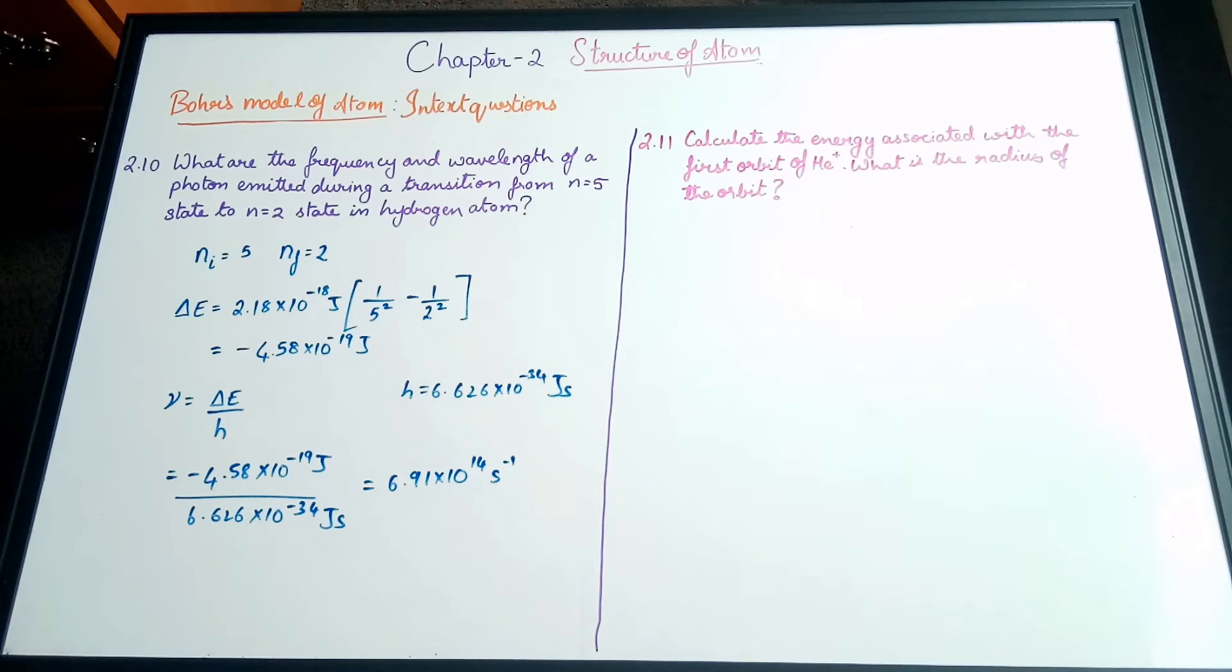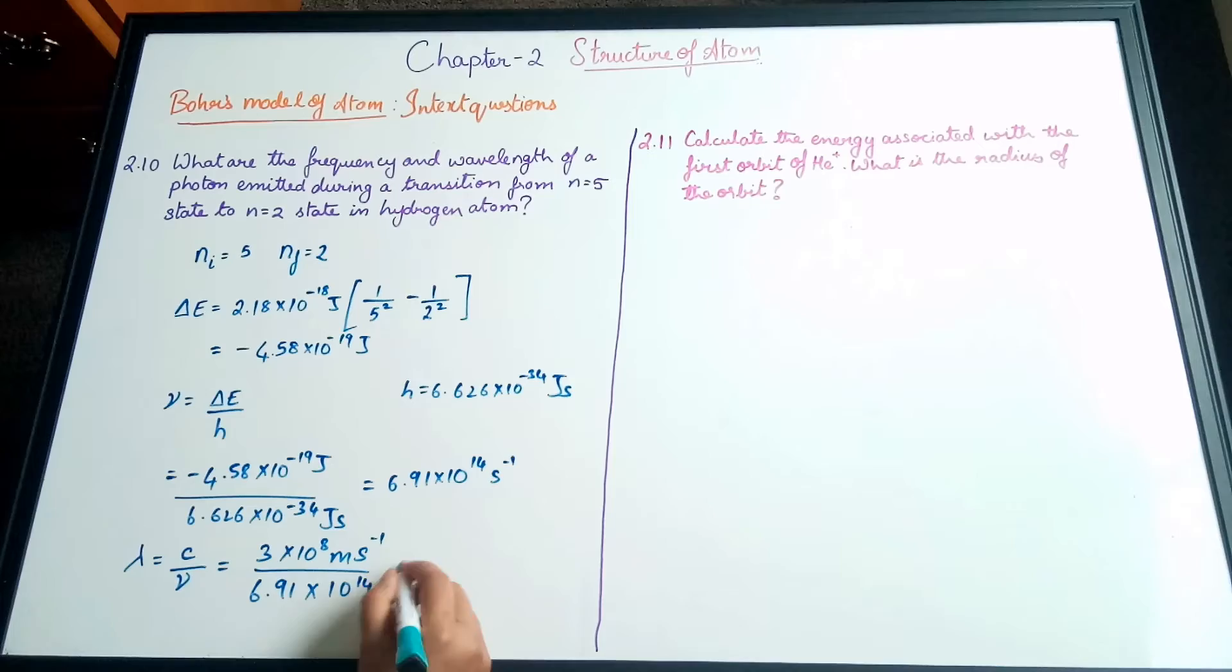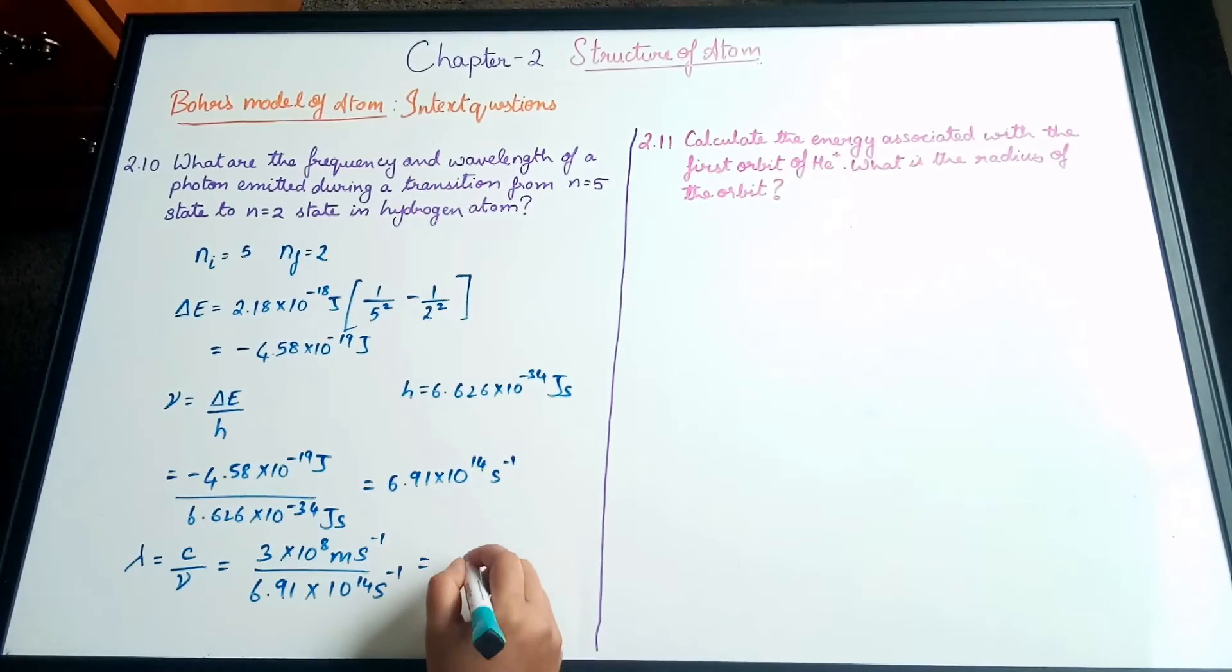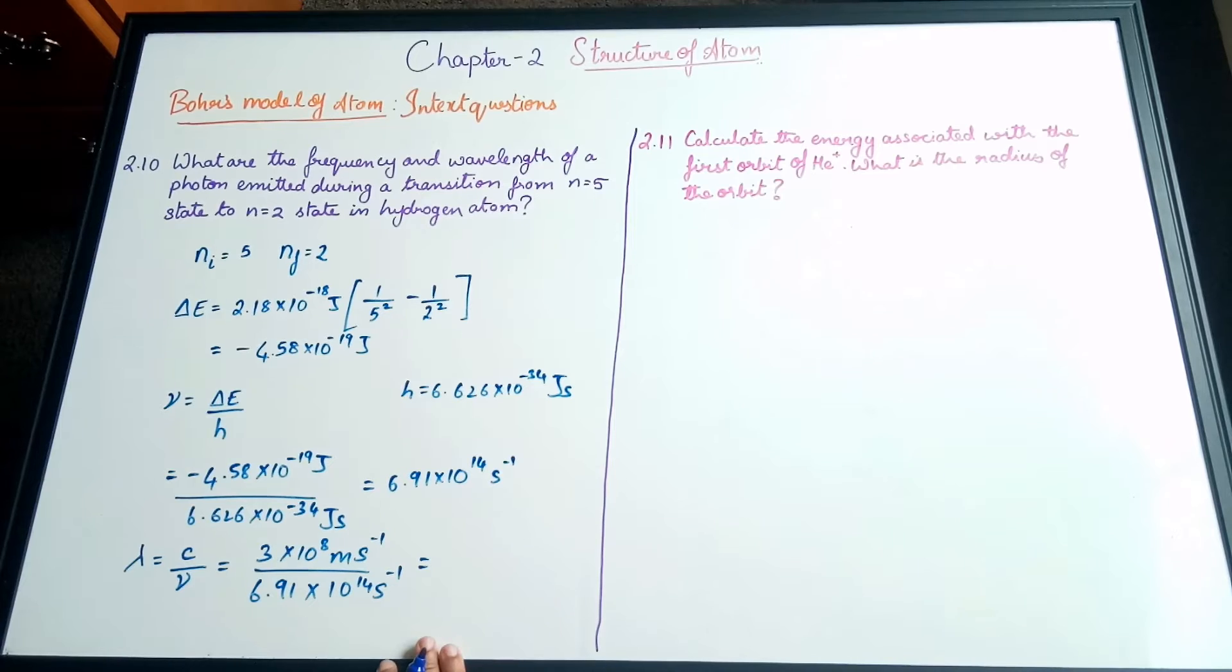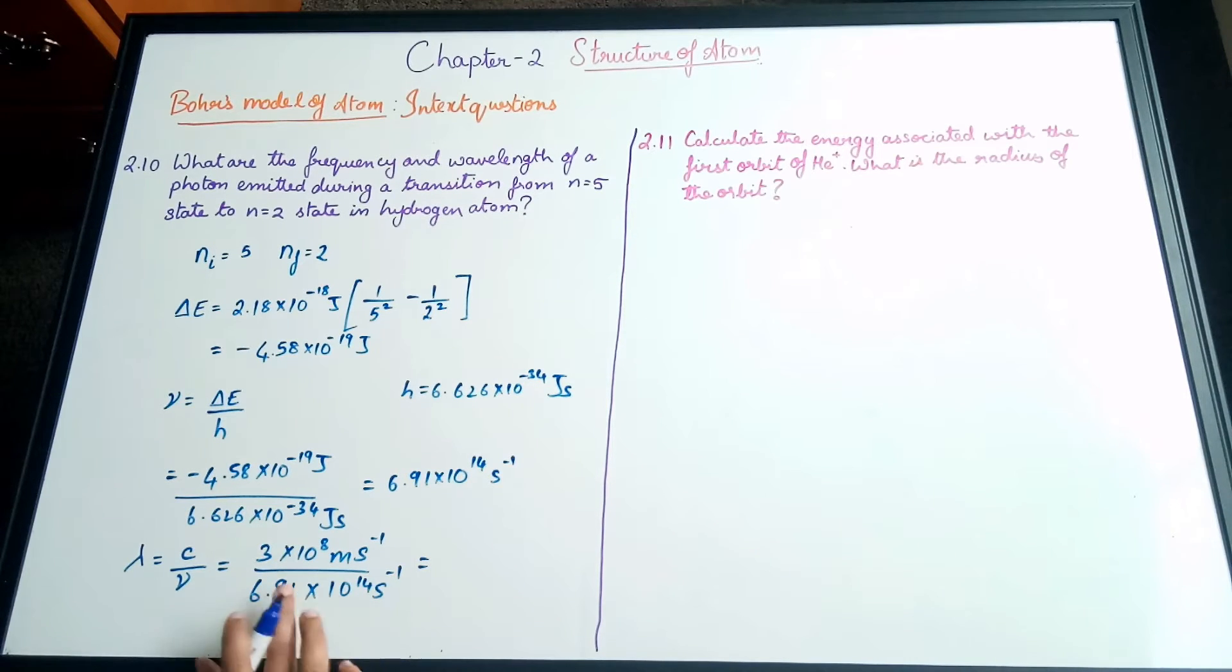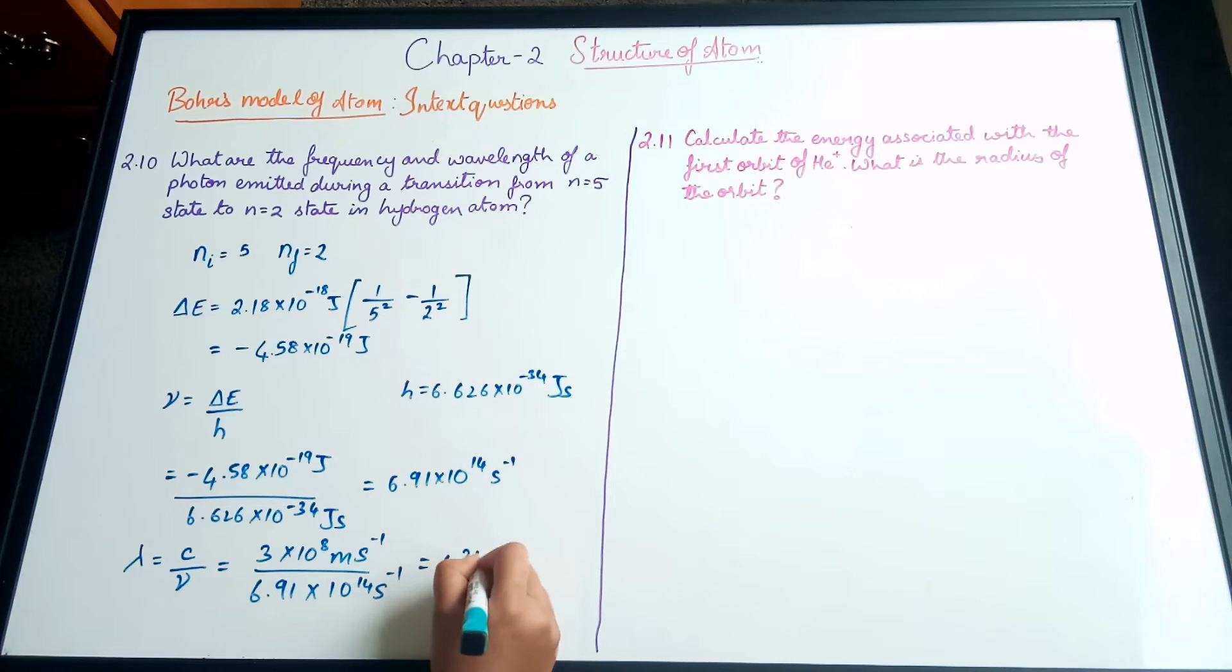From the frequency we can calculate the wavelength. Wavelength λ = c/ν. The velocity of light c = 3×10⁸ m/s divided by 6.91×10¹⁴ s⁻¹. The seconds cancel leaving us with meters. I directly converted to nanometers using the powers of ten, which gives us approximately 434 nanometers.